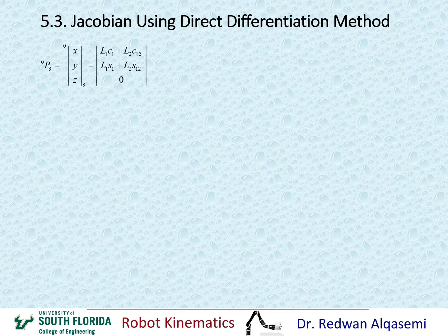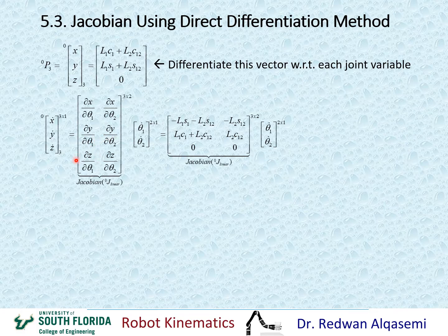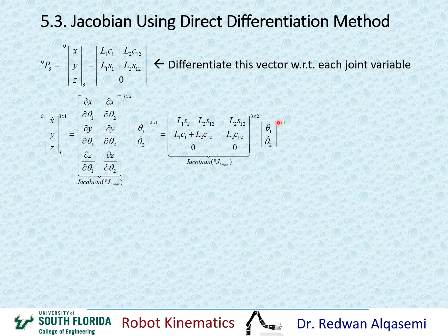Now that we extracted the X, Y, and Z functions, we can differentiate these three functions with respect to theta 1 and theta 2. We construct this equation: X-dot, Y-dot, and Z-dot equal the partial differential of X with respect to theta 1 and theta 2, partial differential of Y with respect to theta 1 and theta 2, and partial differential of Z with respect to theta 1 and theta 2. That gives us the Jacobian relative to frame 0, which is a 3×2 matrix for this example, multiplied by the joint vector theta 1-dot and theta 2-dot.